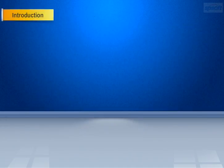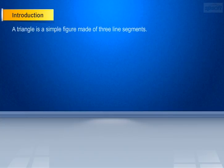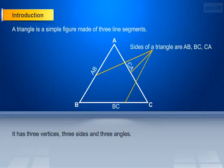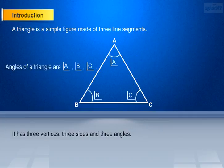Let us recall what we mean by triangle. A triangle is a simple figure made of three aligned segments. It has three vertices, three sides, and three angles. Here, sides of a triangle are AB, BC, and CA. Angles of a triangle are angle A, angle B, and angle C.